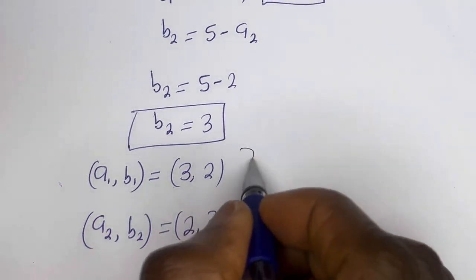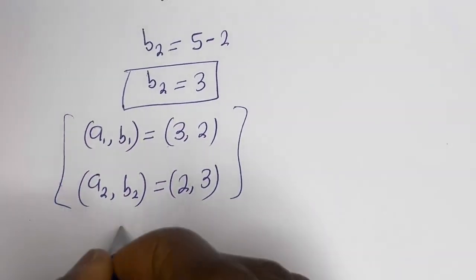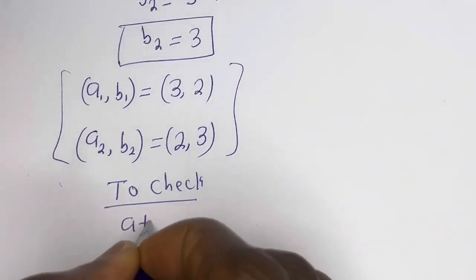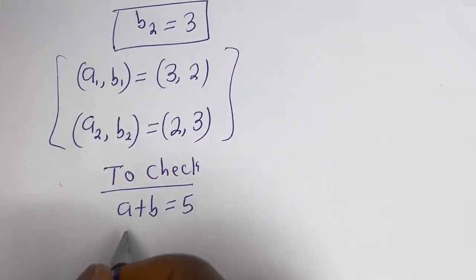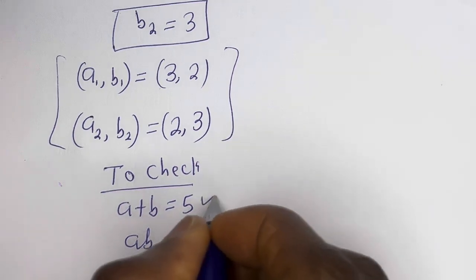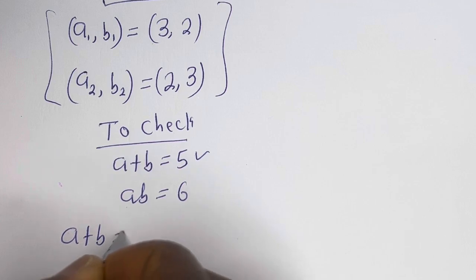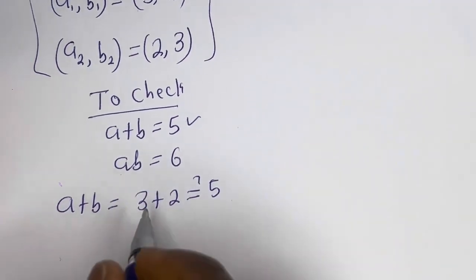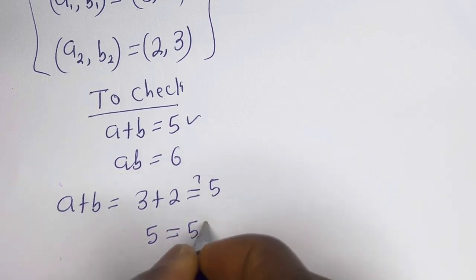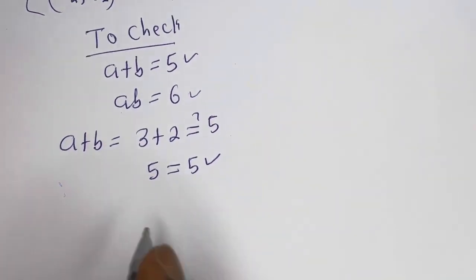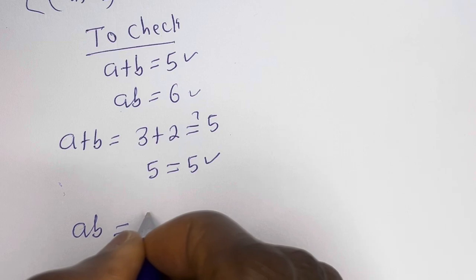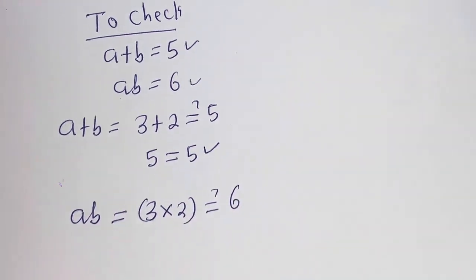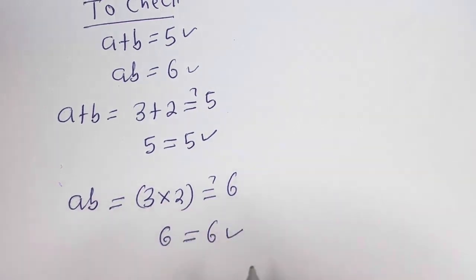We may check to confirm if this answer is correct. Using the given equations a plus b equals 5 and ab equals 6: checking a plus b gives 3 plus 2, which equals 5 — true. Checking ab gives 3 times 2, which equals 6 — true. Both conditions are satisfied, confirming our answers are correct. I hope you enjoyed the video.